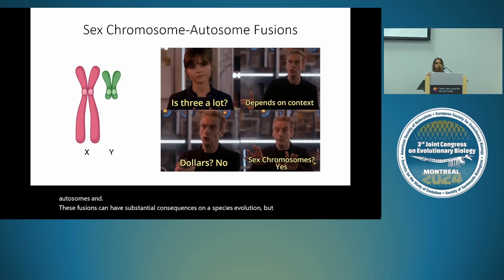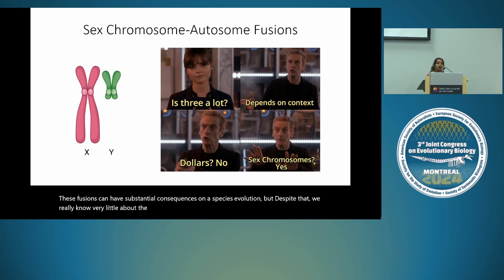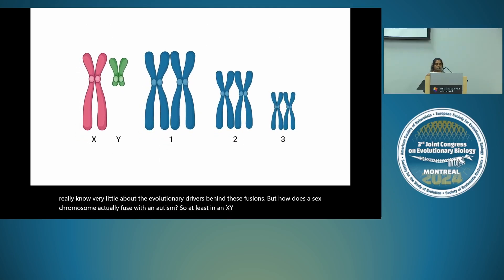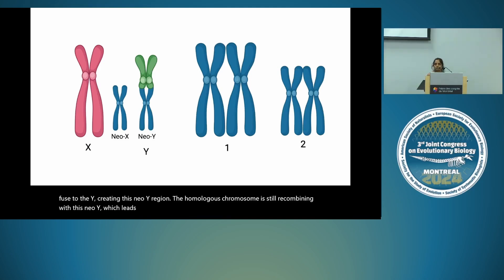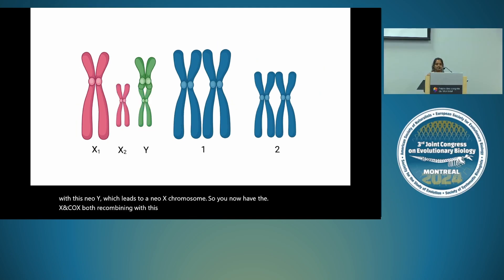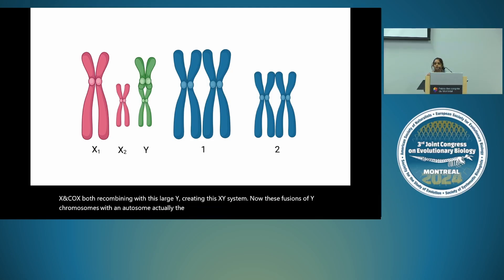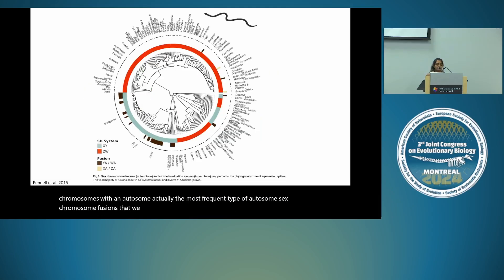Despite the importance of sex chromosome fusions with autosomes, we know very little about the evolutionary drivers behind them. In an XY system, an autosome fused to the Y creates a Neo-Y region. The homologous chromosome recombines with this Neo-Y, leading to a Neo-X chromosome, so you have the ancestral X and Neo-X both recombining with this large Y — creating an XXY system. Y-autosome fusions are actually the most frequent type of autosome sex chromosome fusion in squamates.